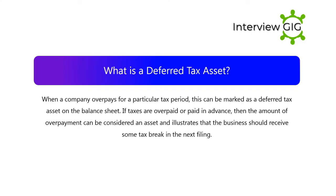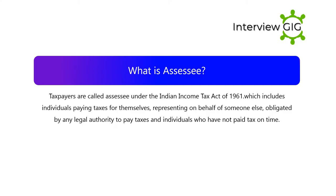What is a deferred tax asset? When a company overpays for a particular tax period, this can be marked as a deferred tax asset on the balance sheet. If taxes are overpaid or paid in advance, the amount of overpayment can be considered an asset and illustrates that the business should receive some tax break in the next filing.